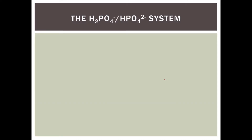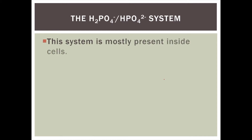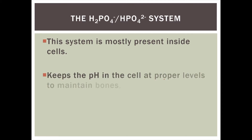The other system is the dihydrogen phosphate / hydrogen phosphate system, which is mostly present inside the cell — not so much in your bloodstream. This system is designed to keep the pH in the cell at proper levels so that you can maintain healthy bones, healthy teeth, and DNA. Phosphate is also necessary for ATP so that you can have energy for your cellular functions. Without a proper balance of this buffer system, the pH will make it harder for your body to function.